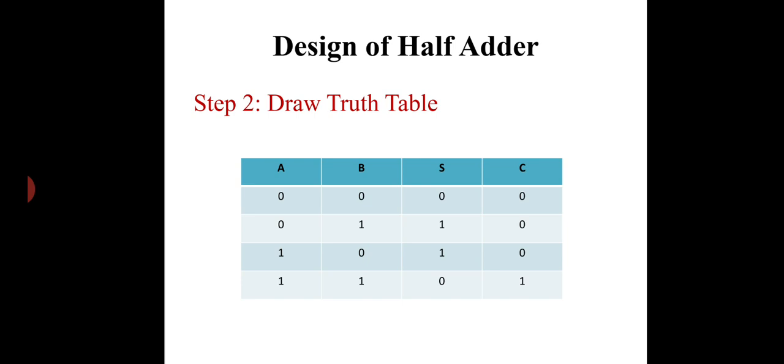For the next combination, A is 1 and B is 0, then sum is 1 and carry is 0. And when A is 1 and B is 1, then as we know in the binary number system...